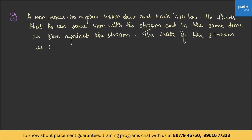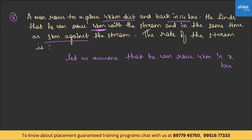Second question: a man rows to a place 48 km away and back in 14 hours. He finds that he can row 4 km with the stream and 3 km against the stream in the same time. What is the rate of the stream? Let us assume he rows 4 km with the stream in x hours. Downstream distance is 4 and upstream distance is 3, both in the same time x. So downstream speed is 4 divided by x, and upstream speed is 3 divided by x.